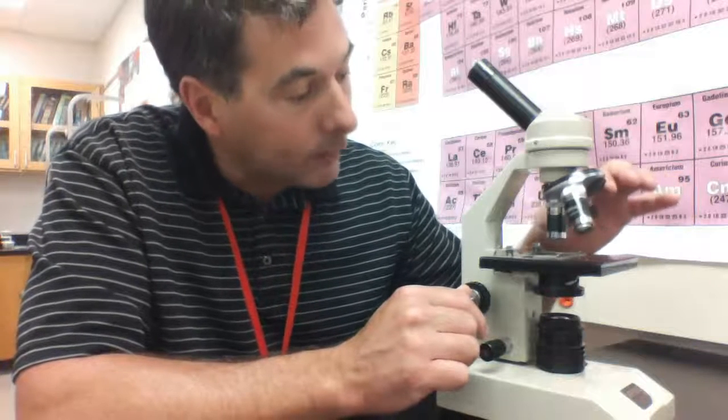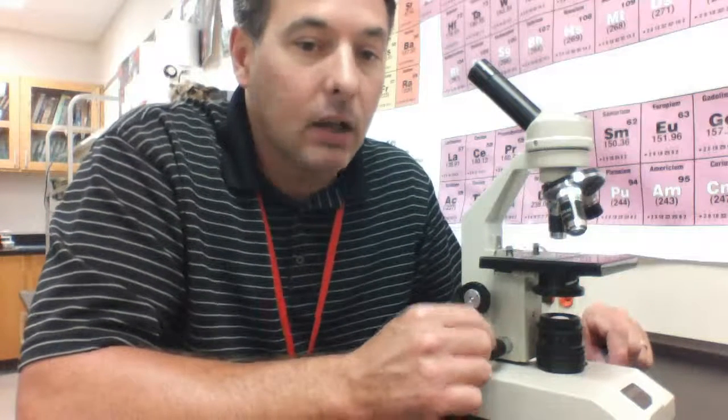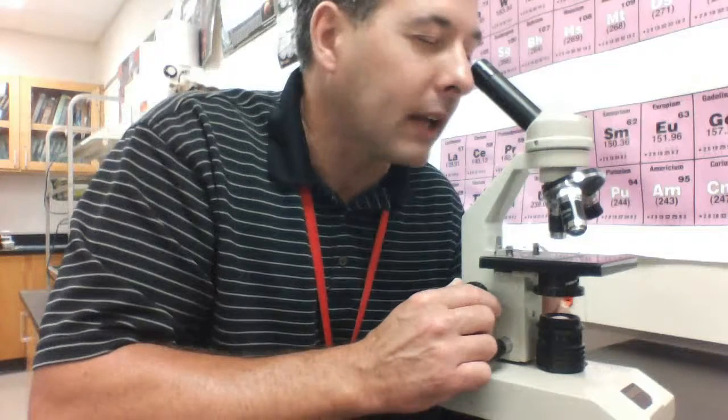And now we are ready to adjust to low power. So once it's in focus, we switch the revolving nosepiece to our low power objective. The low power objective has a magnification of 10x, which gives us a total magnification of the 10 times the 10x of the eyepiece of 100x total magnification.